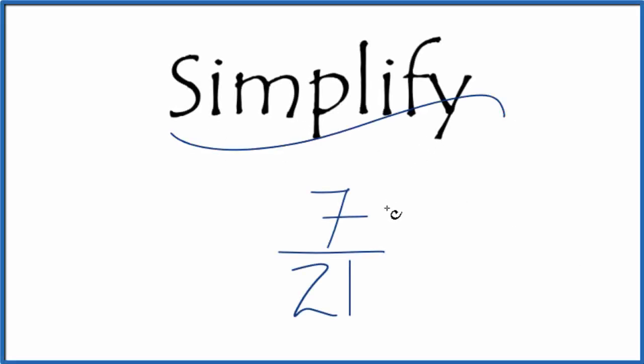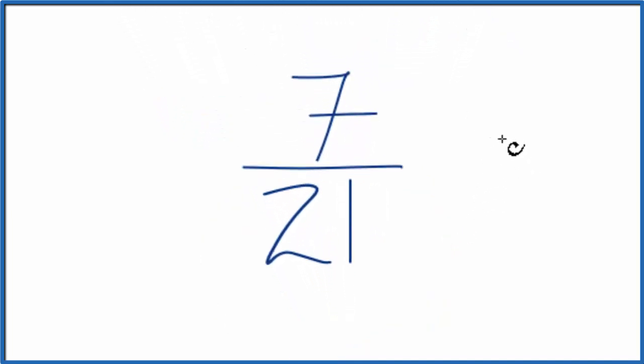If you need to simplify the fraction 7 over 21, here's how you do it. What we're trying to do is reduce or simplify the fraction 7/21 to another fraction that's equal, that's equivalent, but in lowest terms.